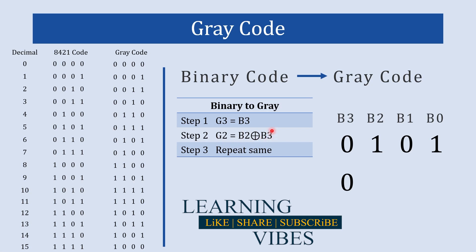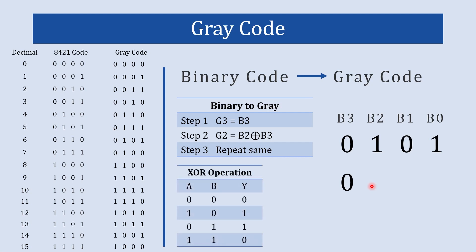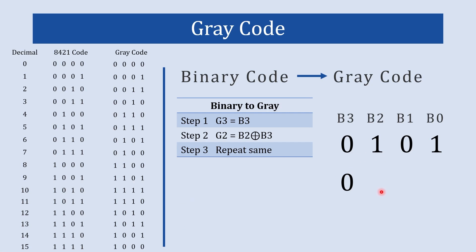In step two, we find g2 using the XOR operation of b2 and b3. Here is the XOR table: when both inputs are the same, the output is 0; when both inputs are different, the output is 1. So b2 XOR b3 — both inputs are different — gives us g2 = 1.